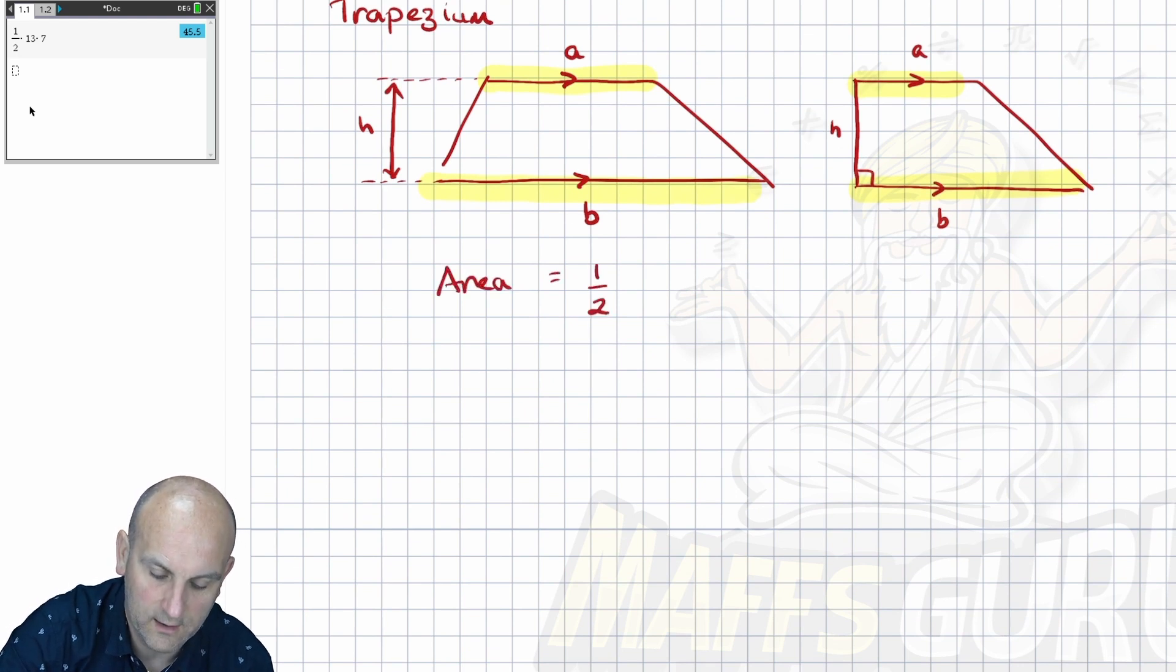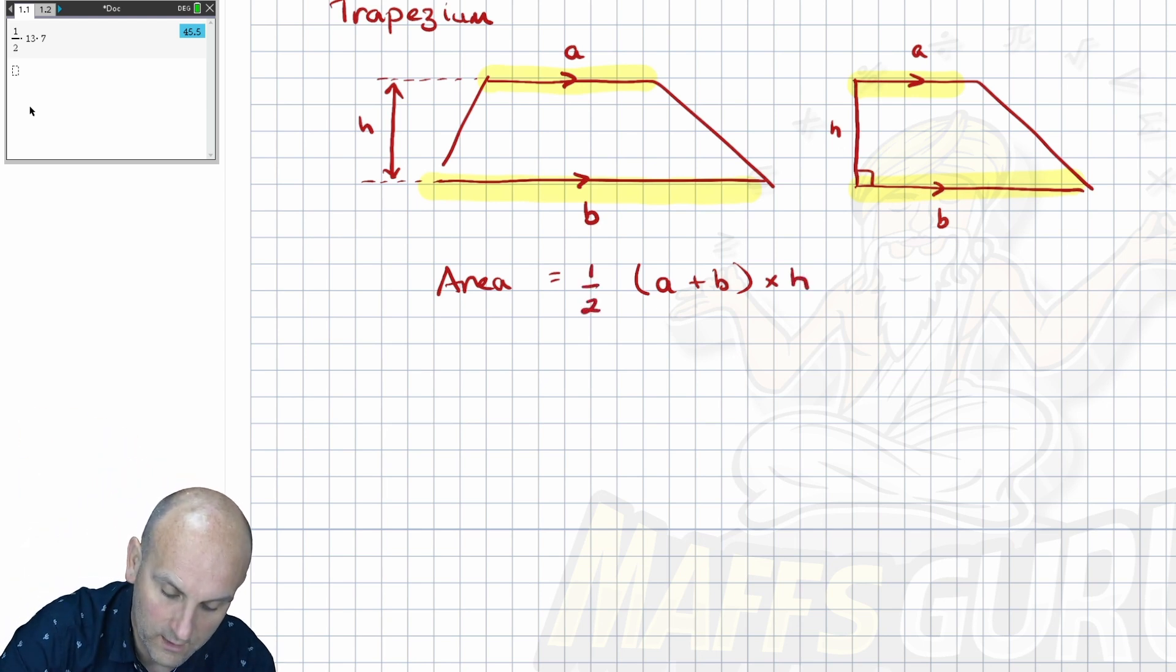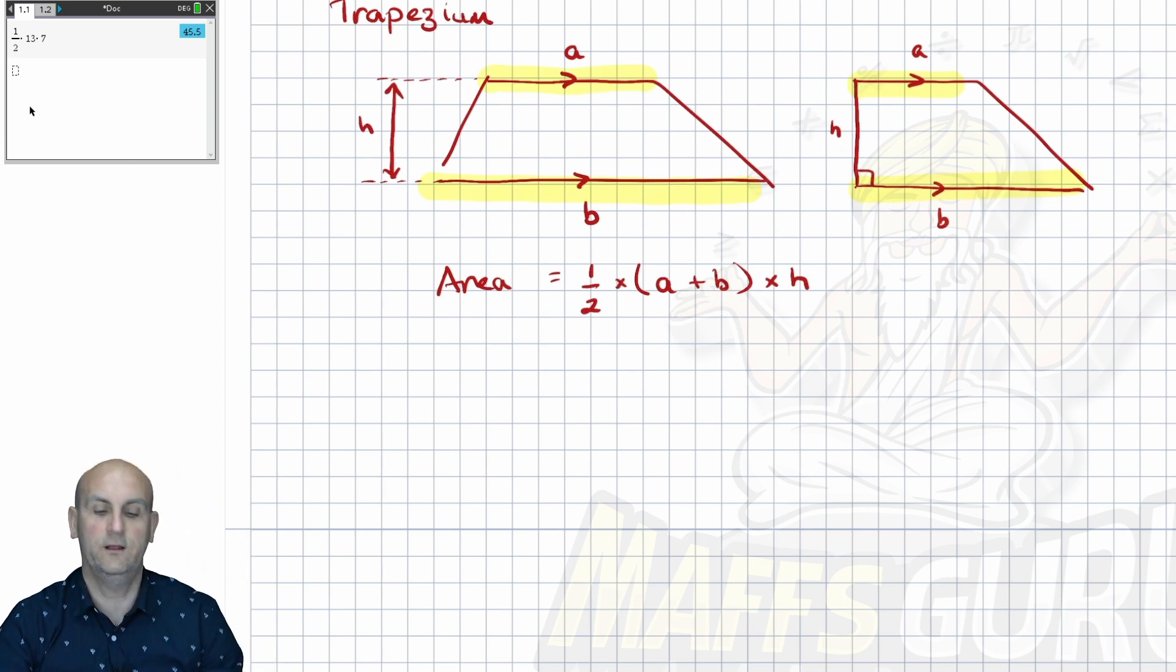So if I was going to write this in a more mathematical way, the area would be a half times, so actually let's just do it the way that it says. Add the parallels, so I do A plus B in brackets to tell us to do that first. We're going to say add times by the height, then times that by the height, and then half your answer. So a half of your answer. And there we go. That is actually the formula for the area of a trapezium.